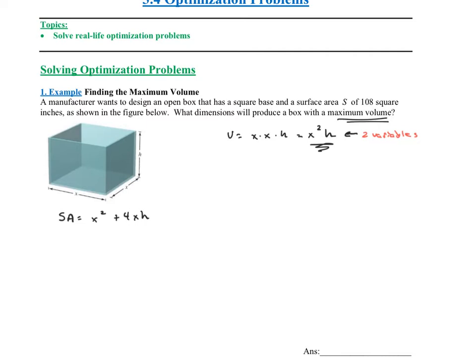What other information is given? The problem says that the surface area must equal 108 square inches. So now I can go back to my surface area equation and set it equal to 108. This allows us to solve for one of the variables in terms of the other. I can solve for h or x, whichever one's easier. I'm going to solve for h, starting by subtracting x squared from both sides.